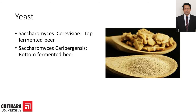Next we have a very vital and critical component in the beer making process: yeast. There are two types of yeast used. One is Saccharomyces cerevisiae, which is used in top-fermented beers, and the second is Saccharomyces carlsbergensis, which is used in bottom-fermented beers. During the beer making process we will understand how these two yeasts differentiate the process.